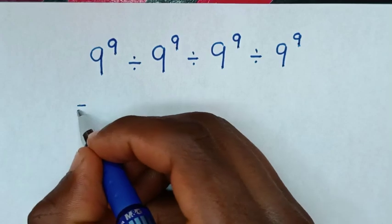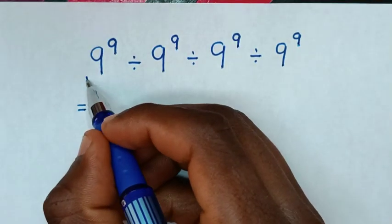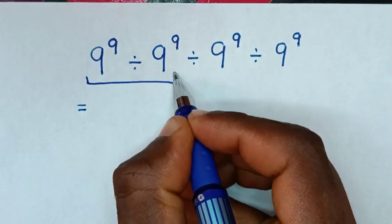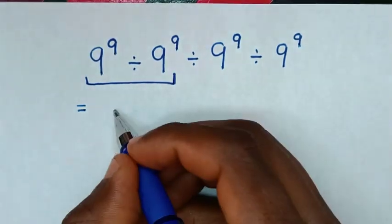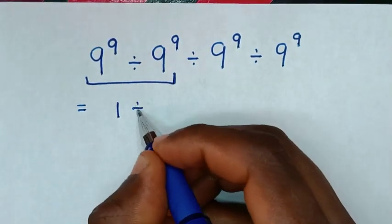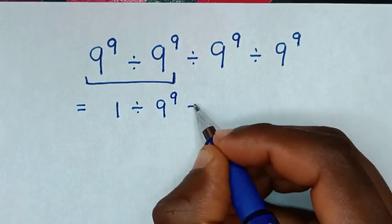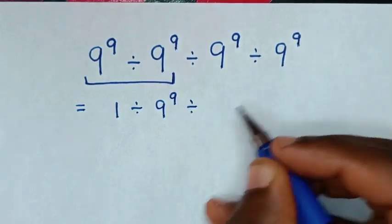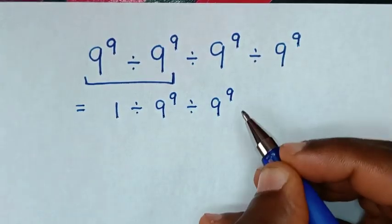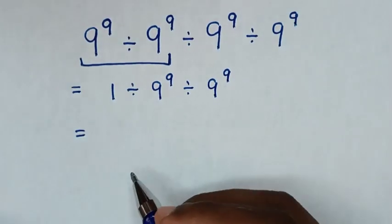We will start to deal with this first division: 9 power 9 divided by 9 power 9, which is 1. Then divide by 9 power 9 divided by 9 power 9. So it will be equal to 1 divided by 1, which is 1.